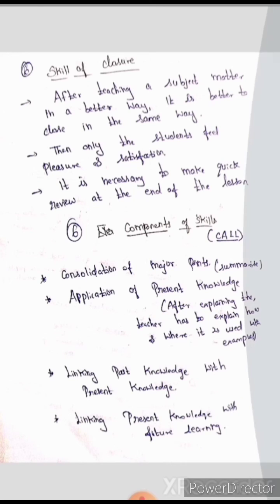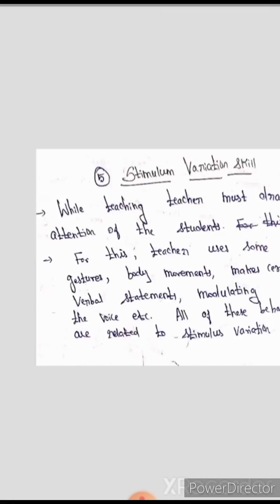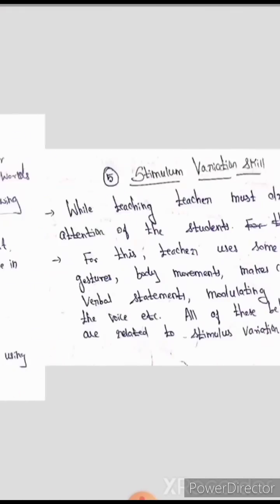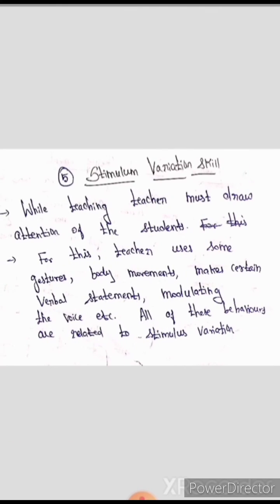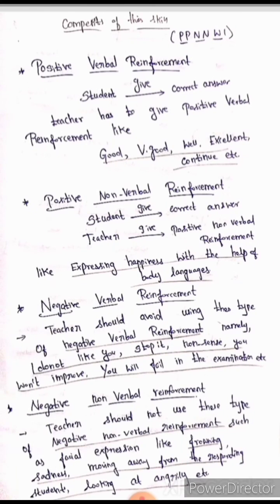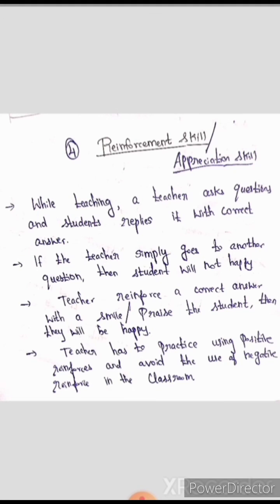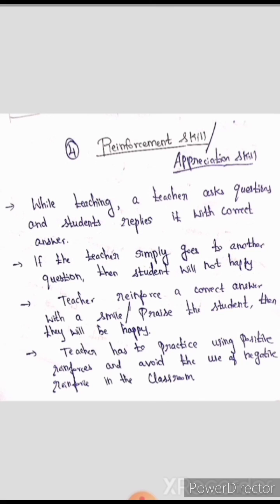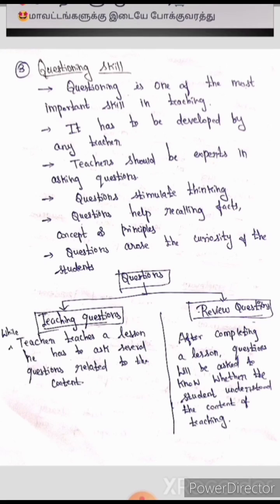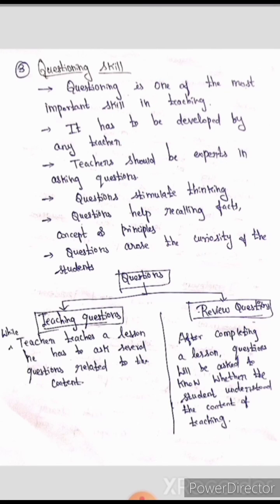These are the six skills we have covered. In the skill of closure, the conclusion depends on summarizing. Stimulus variation skill involves body language and voice modulation. Reinforcement and appreciation skill involves positive and negative components. Questioning skills involve two types of questions — teaching questions and review questions — and three levels of questioning skills: lower-order, intermediate, and higher-order.